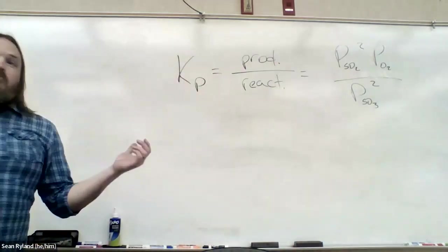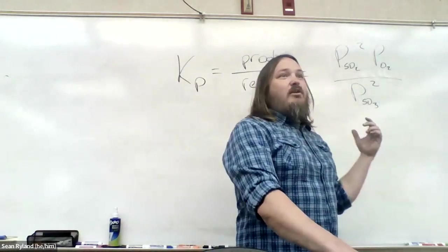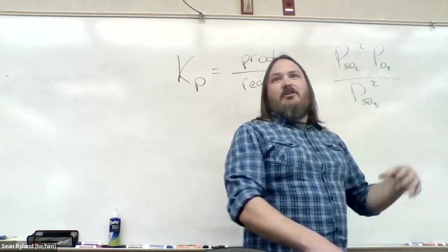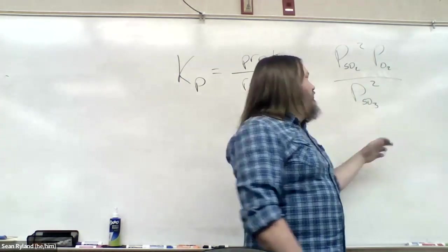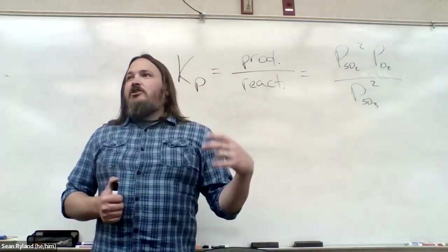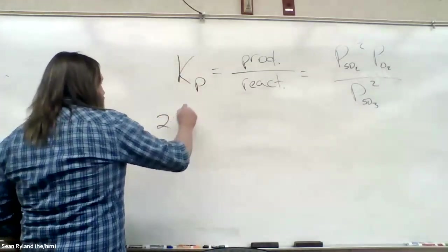Because in equilibrium, we always care about everything's final concentration or everything's final pressure. And so when we have more than one thing changing pressure, changing concentration at the same time, we're going to use an ice table.